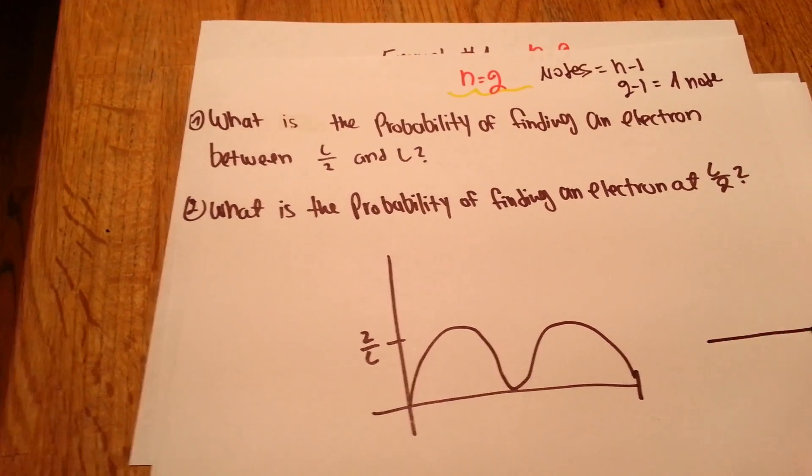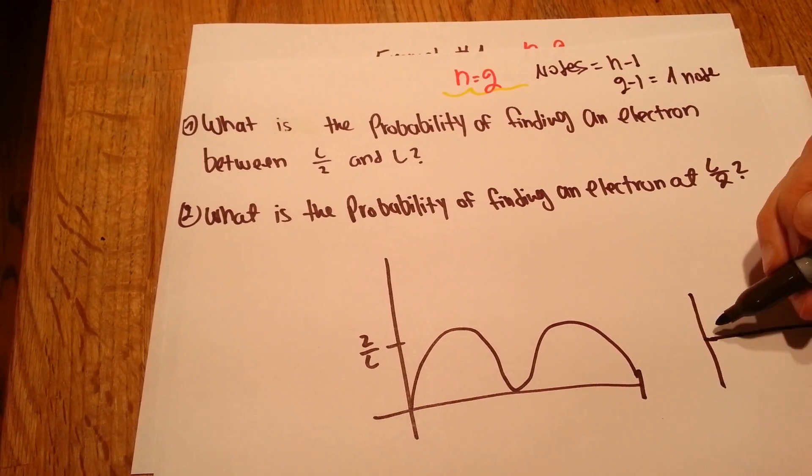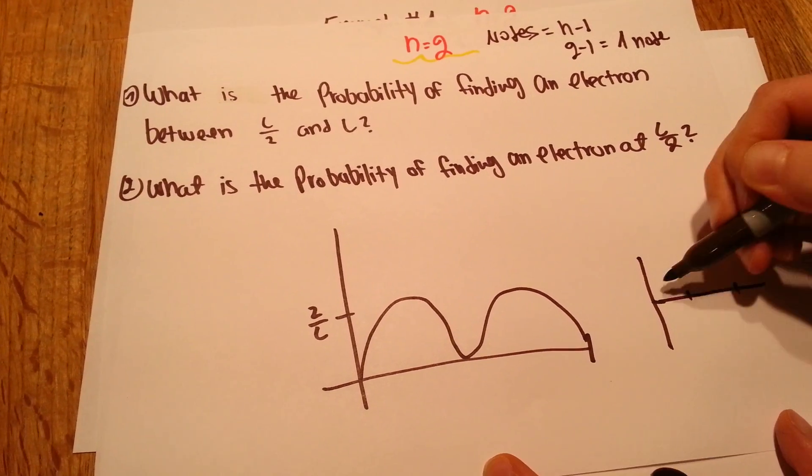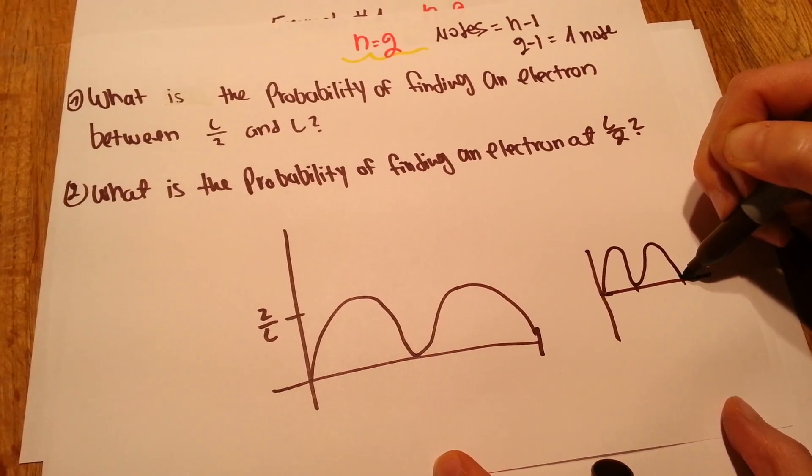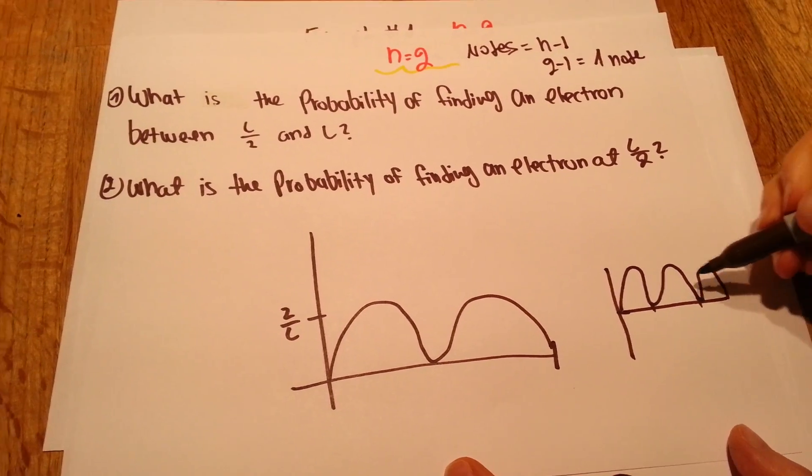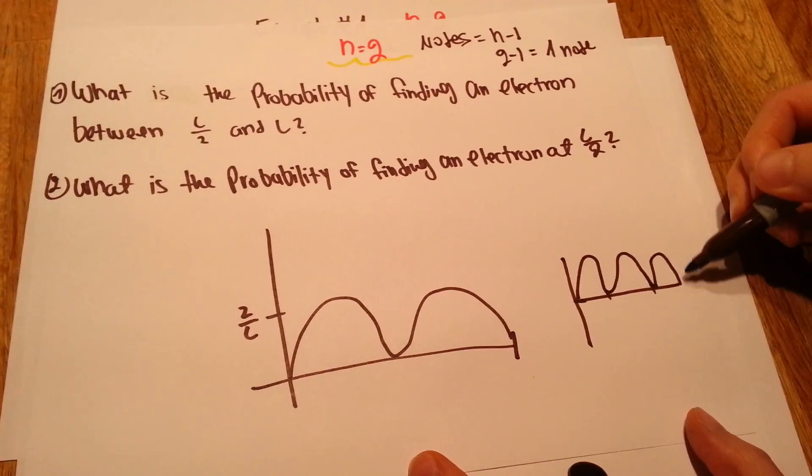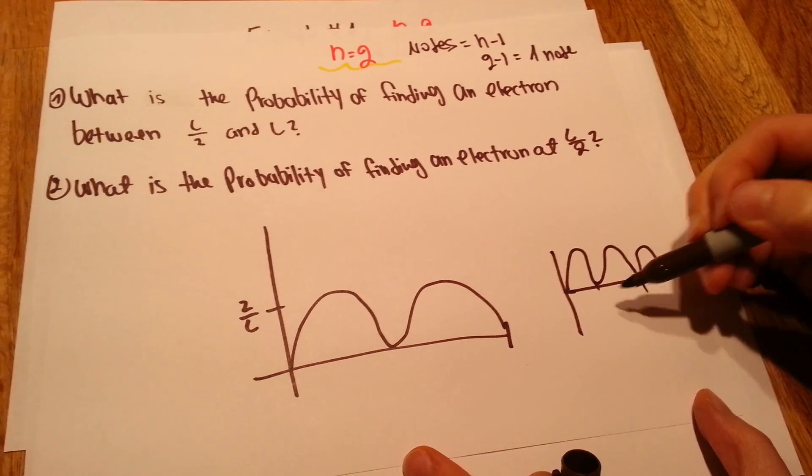If it was n equals 3, by the way, it would be 2 nodes. And we have like 3 hills, we can say. And these are the nodes.